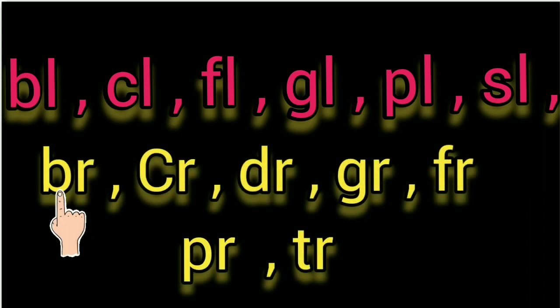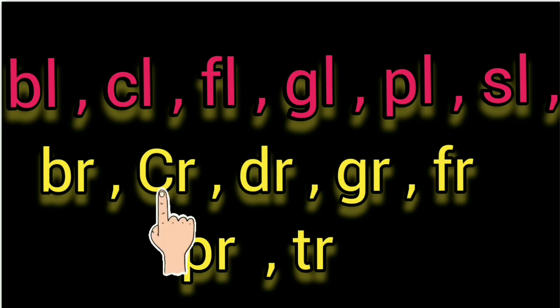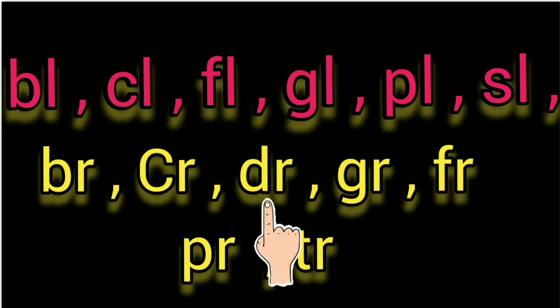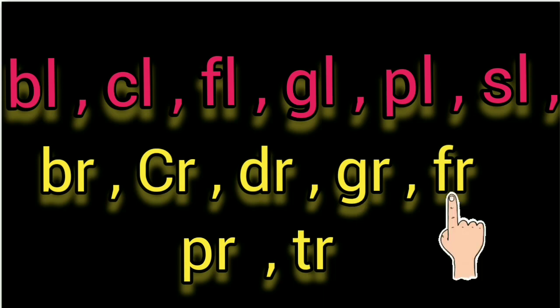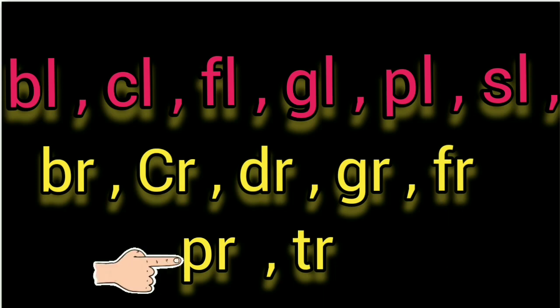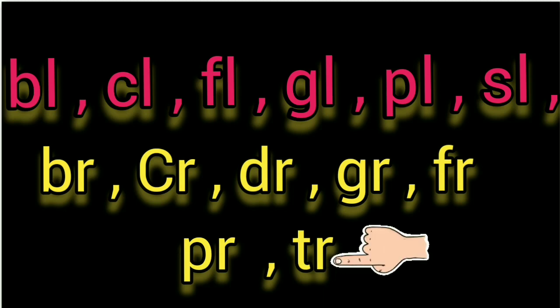BR — BR as in brown. CR — CR as in crop. DR — DR as in drop. GR — GR as in grass. FR — FR as in frog. PR — PR as in crop. TR — TR as in train.